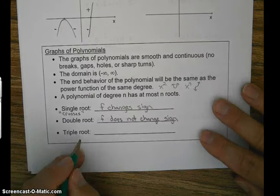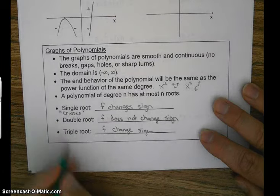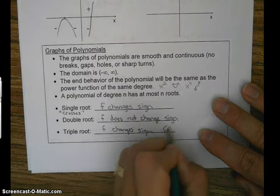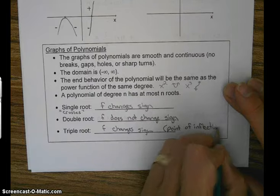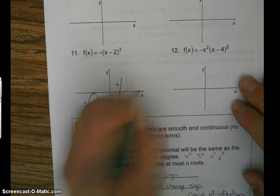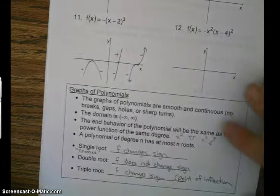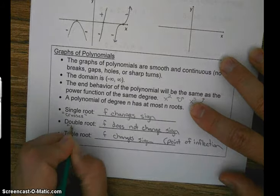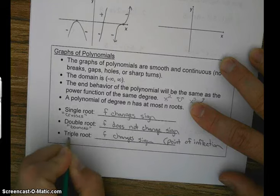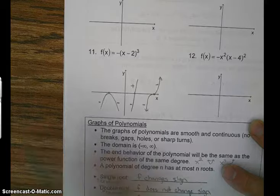Triple root: the function changes sign. And this is also called a point of inflection. So let's say we have a triple root here — we're going up, go through, and notice it went from negative to positive. I also call it a saddle point. For double it bounces, and for triple it wiggles like a worm — just to help you visualize. Here's your bounce, here's your crossing, here's your wiggle.